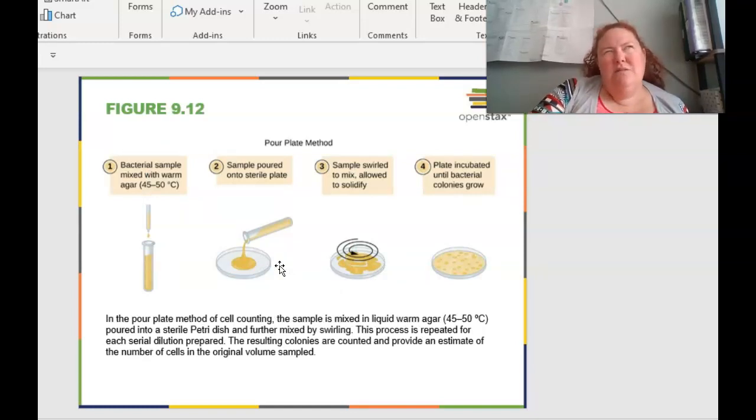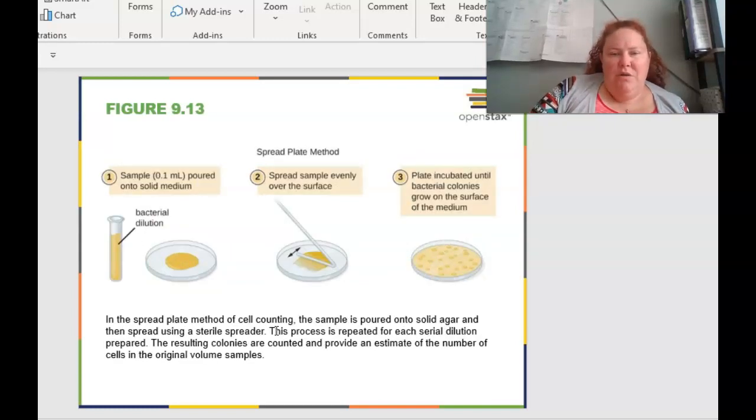Plate pouring methods. I don't think we get to do any of this in lab, but it's pretty cool to be able to do. So basically you have a bacteria sample that's going to be mixed with the warm agar and then the sample is poured onto a sterile plate and then you use a hockey stick. It's literally called a hockey stick. Or you can swirl it around to mix it and allow it to solidify. And then the plate is going to be incubated into the bacterial colonies grow. And so this is really cool because it can be repeated for each serial dilution to get an accurate count of what's going on.